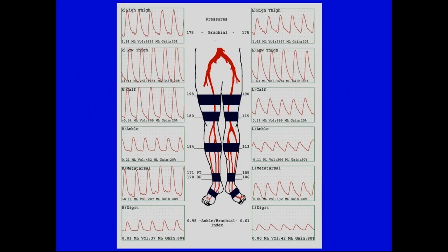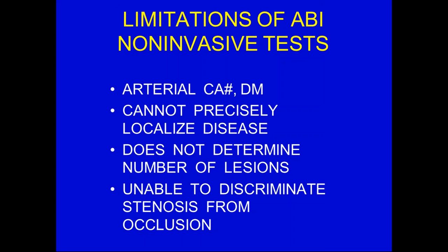This is an example of what an ABI typically looks like when the information is registered. Brachial arteries are 175. Looking at the pressures going down right versus left, we can see in the common femoral and superficial femoral the pressures drop to 115 versus 180, and that pressure continues to be decreased on the left side. The ankle brachial index on the right is 0.98 and on the left 0.61, consistent with disease beginning at the most common area — the femoral artery. Limitations of the ABI include arterial calcification and diabetes affecting results. With the ABI, you cannot precisely localize disease, it doesn't determine the number of lesions, and you're unable to discriminate stenosis from an occlusion with extensive collateral vessels.